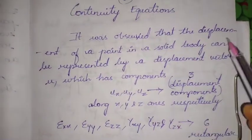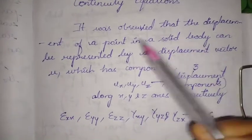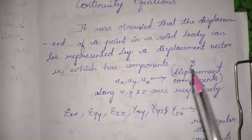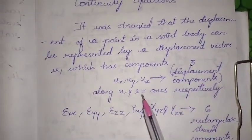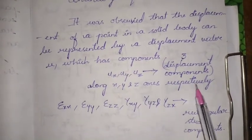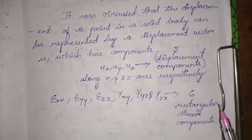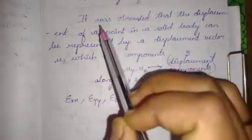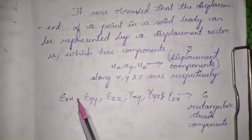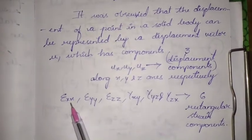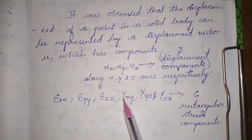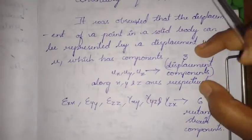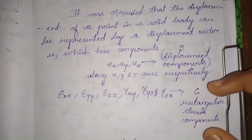It was observed that the displacement of a point in a solid body can be represented by a displacement vector u, that is ux, uy, uz — the displacement components along x, y, and z axes respectively. We also have strain components: epsilon xx, epsilon yy, epsilon zz, and gamma xy, gamma yz, and gamma zx. These three are the displacement components and these six are the rectangular strain components.